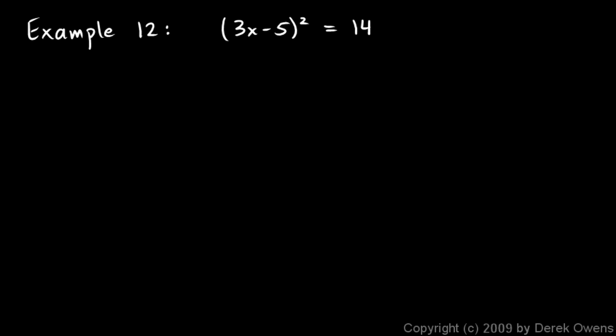Here's another example: 3x minus 5 squared equals 14. What we'll see here is the example involves a fraction, and that's okay. If we square root both sides, the left side — square rooting it just gets rid of the square — so I get 3x minus 5, and over here I have plus or minus the square root of 14. Now I'm trying to solve for x, and I've got rid of the squared thing, but I haven't solved for x yet.